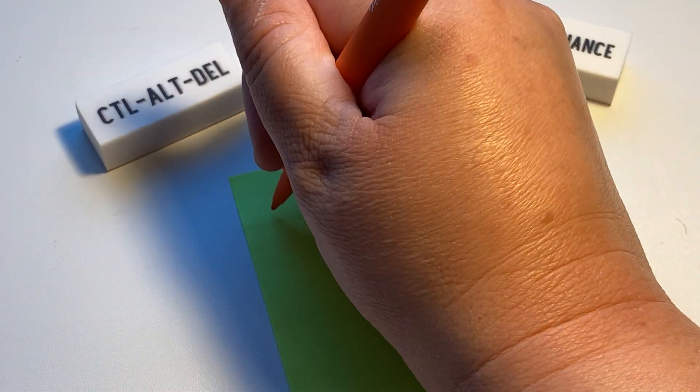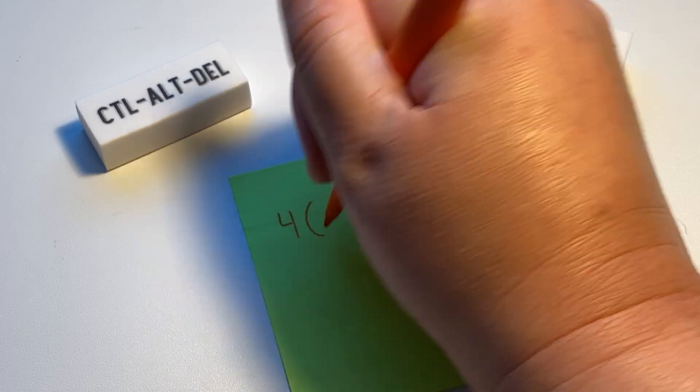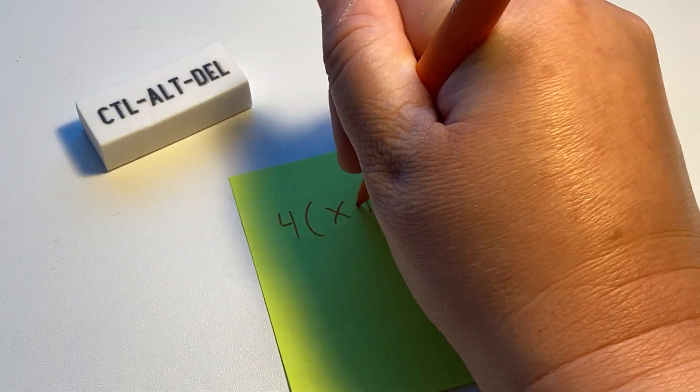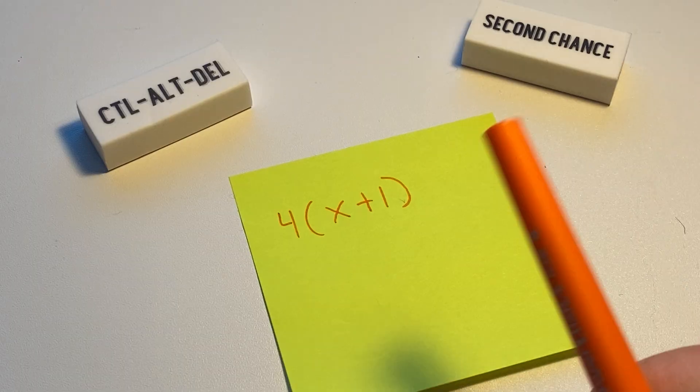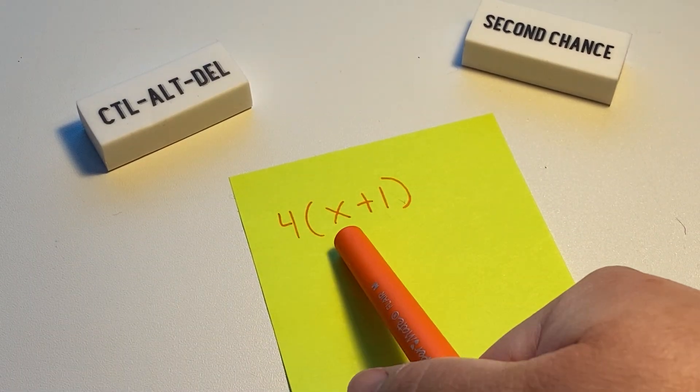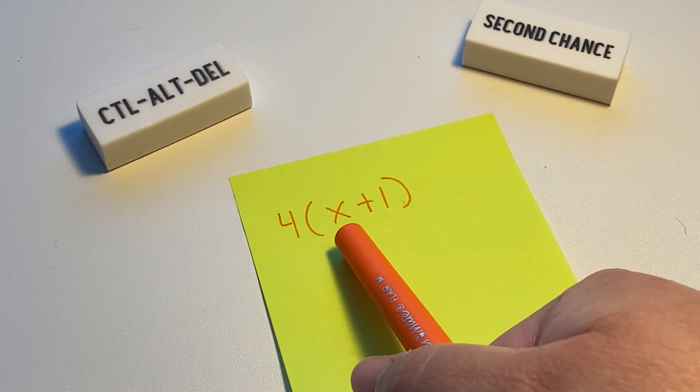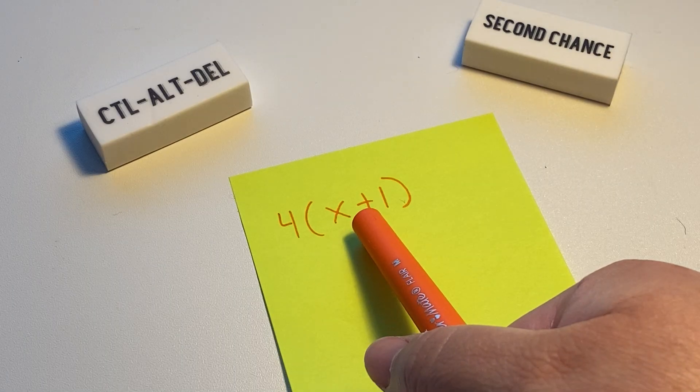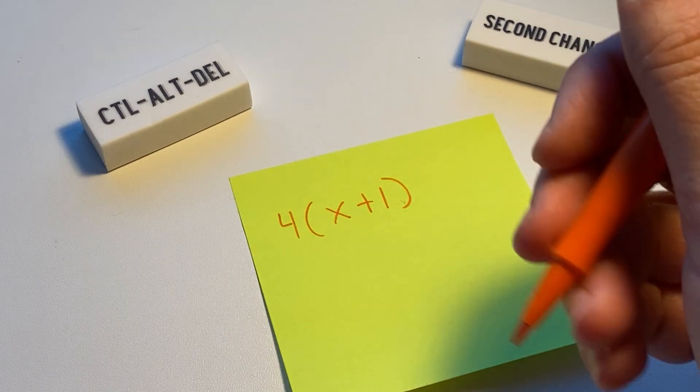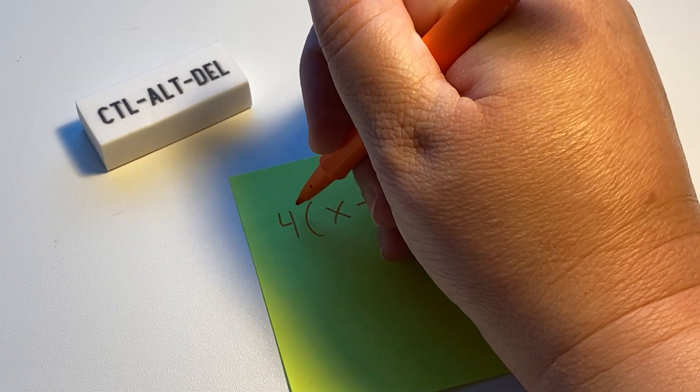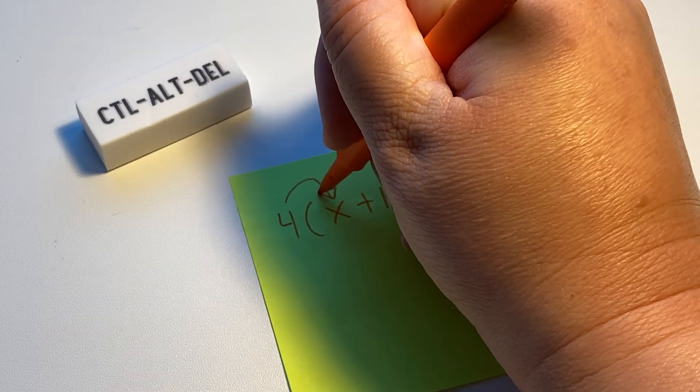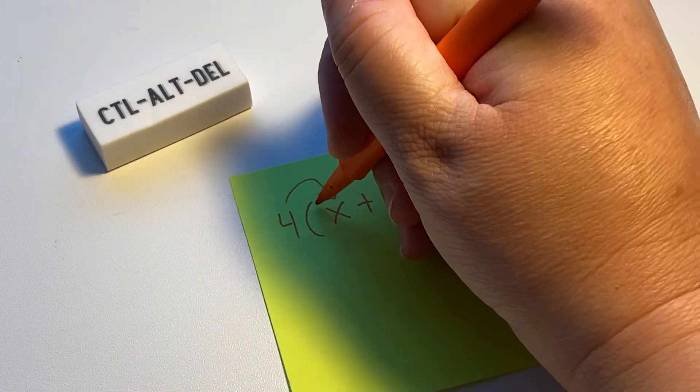Let's say we have 4(x+1). What this literally means is that you have four of whatever is inside the parentheses. So in this case you have four x's and you have four plus ones, and that's how we distribute it out.